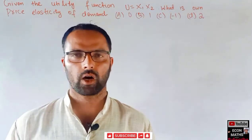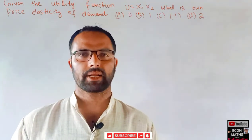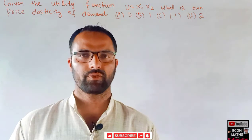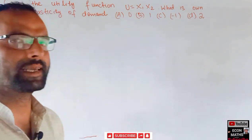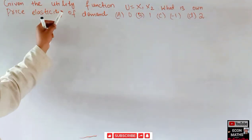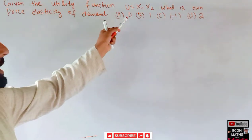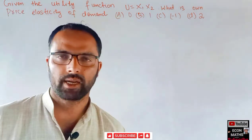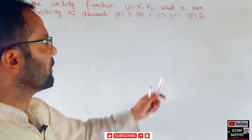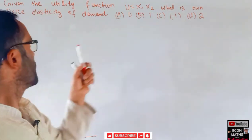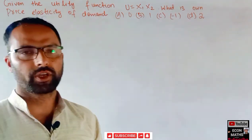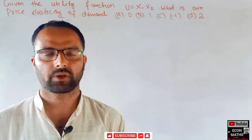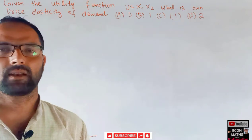We will learn how to find the price elasticity of demand from a given utility function. Given the utility function u = x1 times x2, where x1 and x2 are the two commodities, what is the own price elasticity of demand? We have to find the own price elasticity of demand, also called the price elasticity of demand.